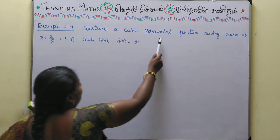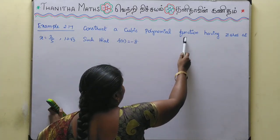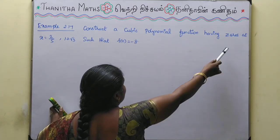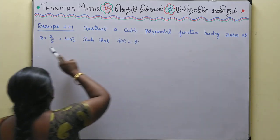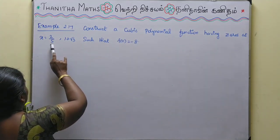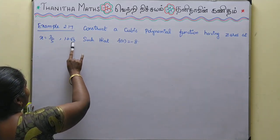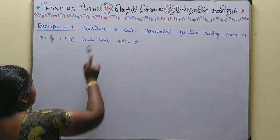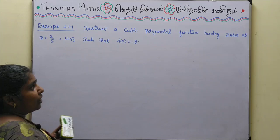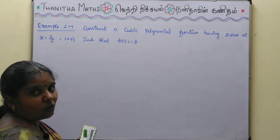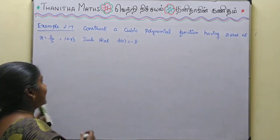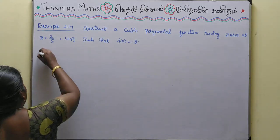Construct a cubic polynomial function having zeros at x = 2/5 and 1 + √3, such that f(0) = -8.